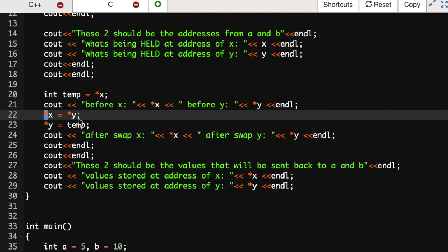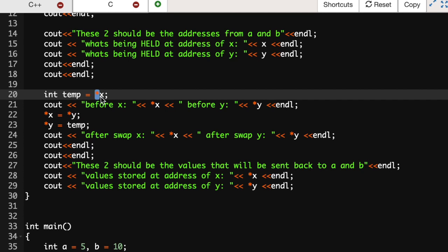Then we have x is equal to y. What we're saying is what x is pointing to is now what y is pointing to, and then we have what y is pointing to is now that temporary variable.